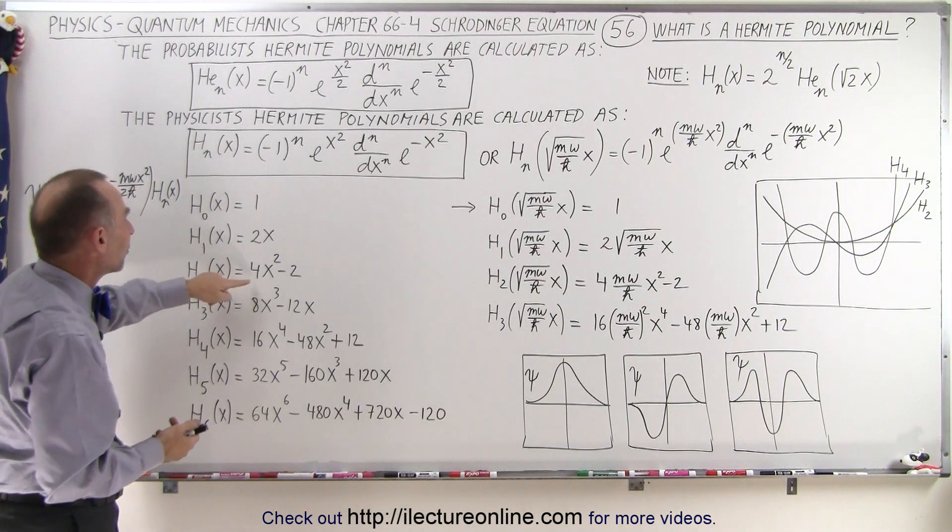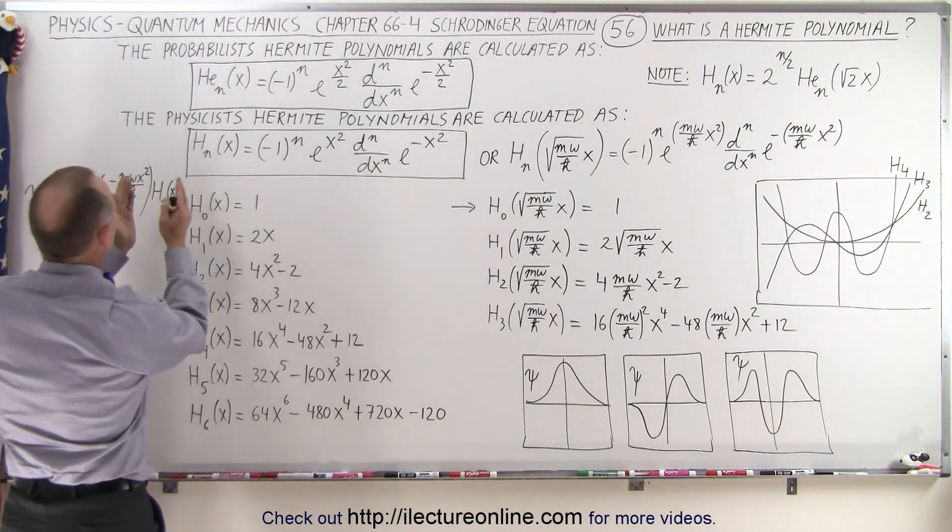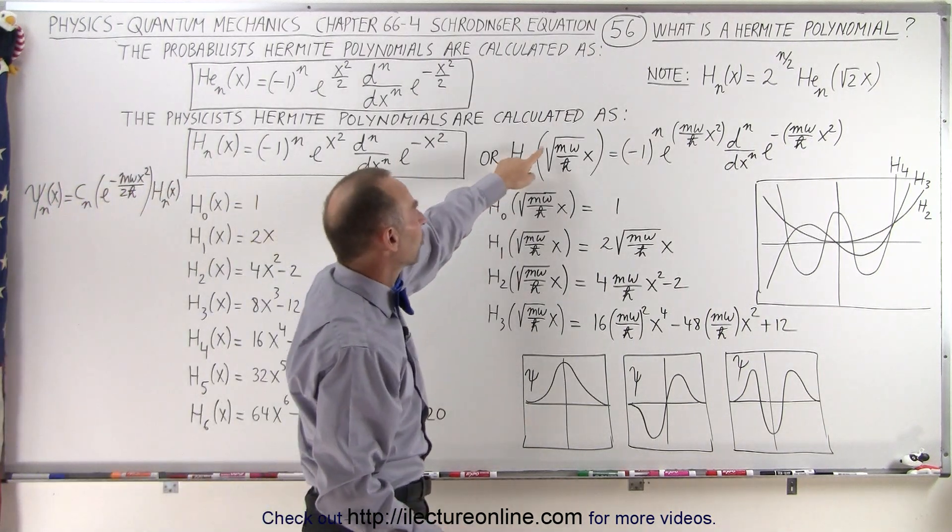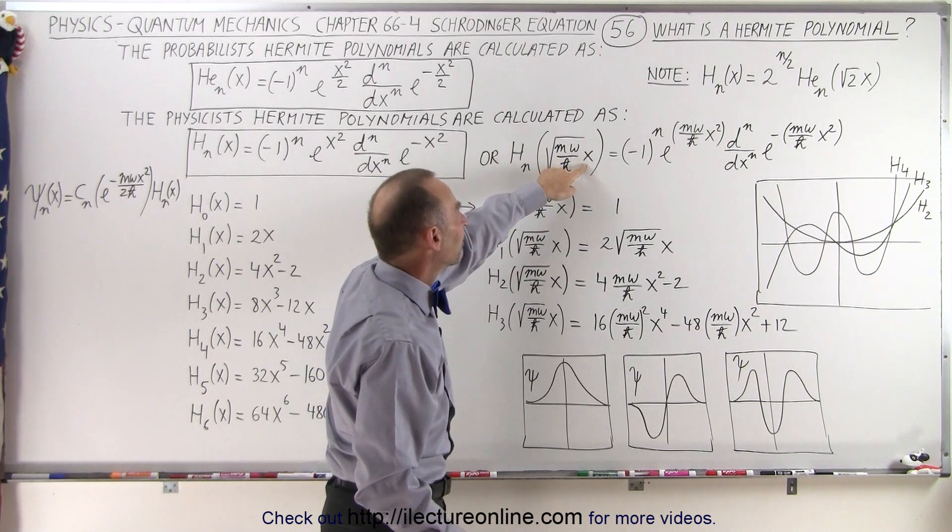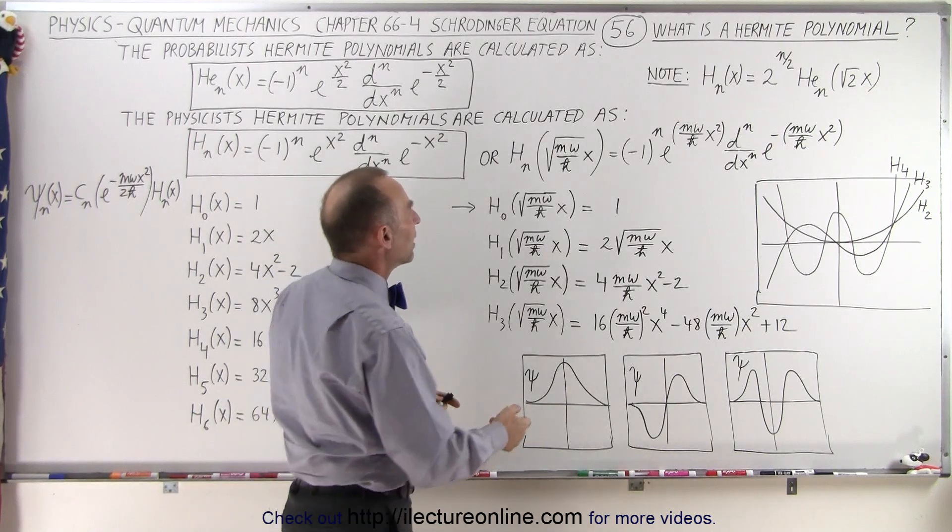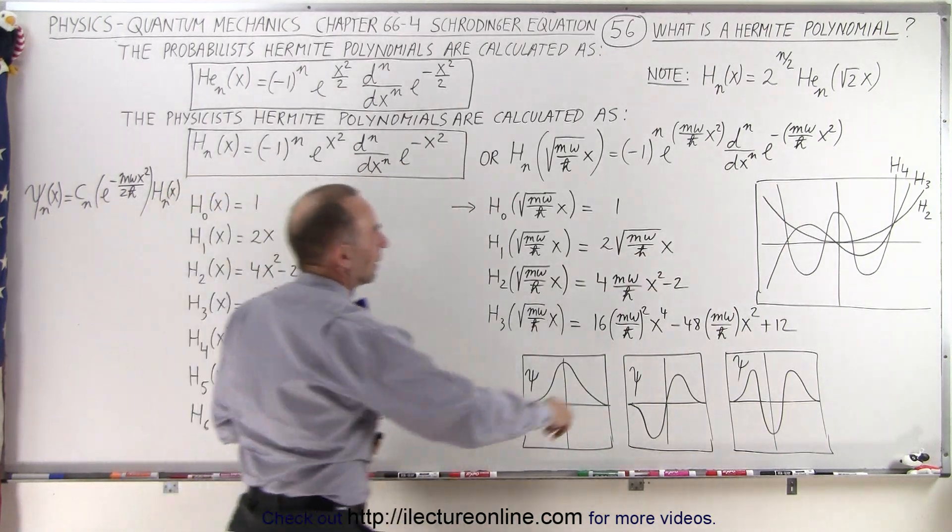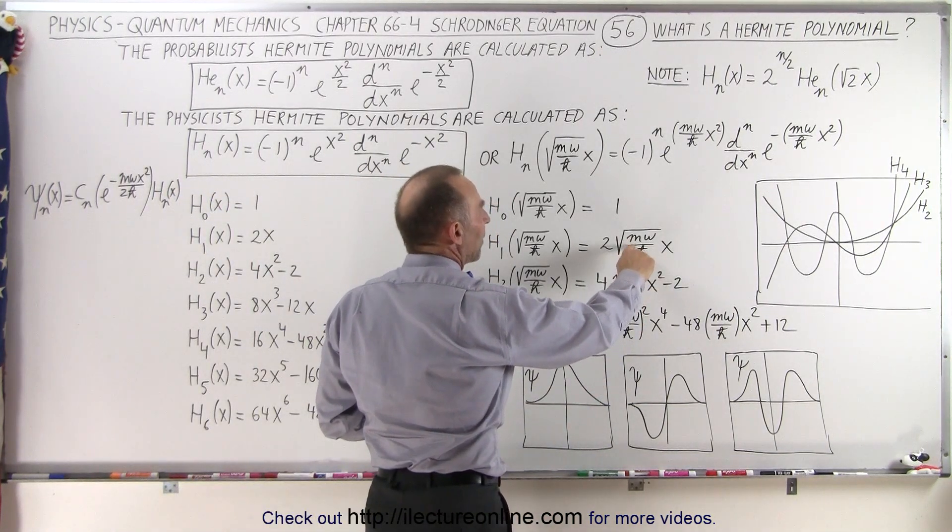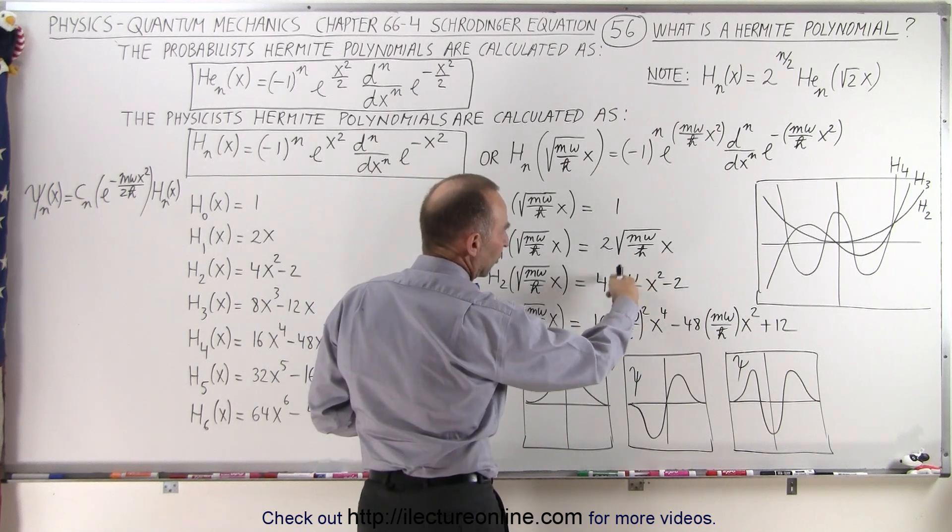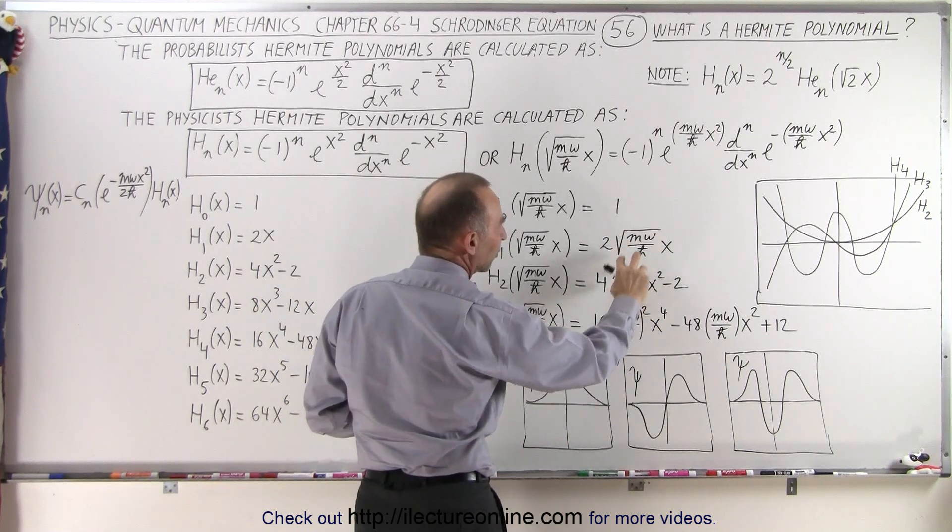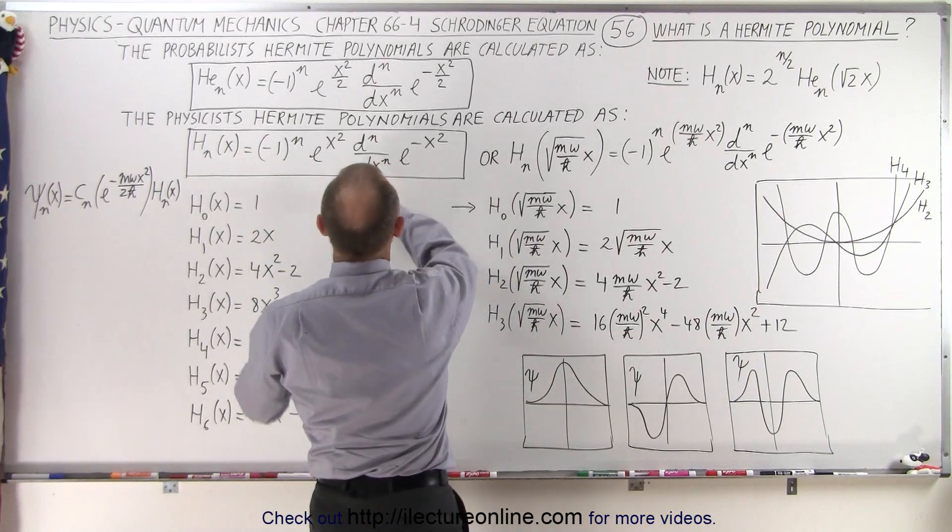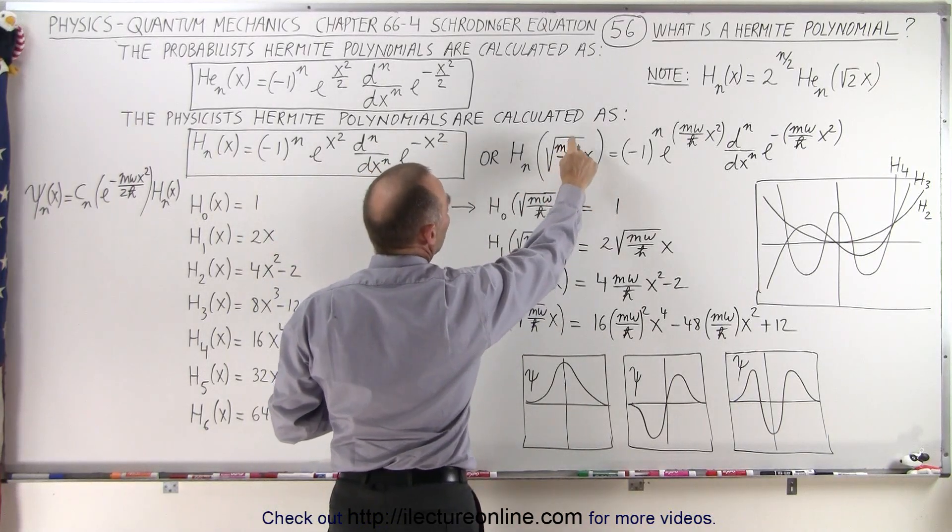Except for one more change. Instead of having it as a function of x, we really want it for a function of the square root of m omega over h-bar times x. Again, we need to relate it to the physical characteristics of the oscillator. So all we need to do is replace every x by the square root of m omega over h-bar times x. If we have an x squared, we're going to square this quantity to get 4 times this quantity squared, x squared minus 2, and so forward. Simply all we're doing is replacing every x by x times the square root of m omega over h-bar.